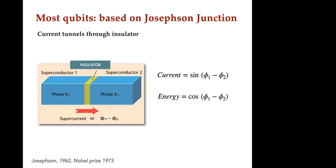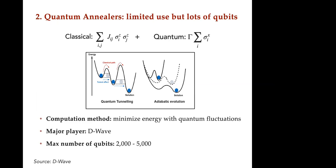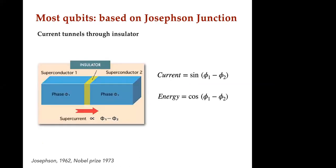Question from audience: For the annealer, is there any quantum error correction theorem? The annealer is more like an analog machine. Response: There is no quantum error correction theorem for annealing. There are ways to implement it with a very large number of qubits but let's table error correction for now. The quantum piece is just the sigma-x transverse field, which doesn't commute with sigma-z and makes them fluctuate.